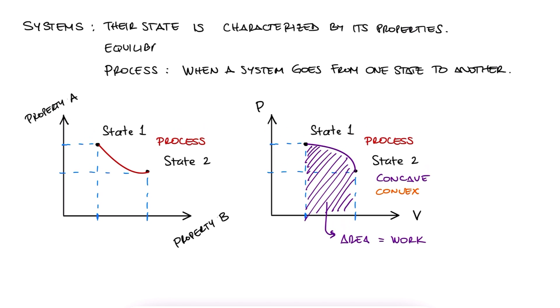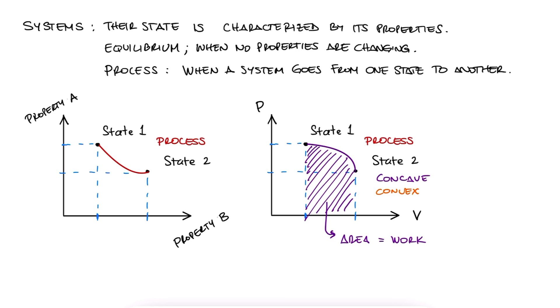A system is said to be in equilibrium when no properties are changing. In many cases, you can still have a process happen when one of the properties we care about is fixed. Basically, when one of the properties we are quantifying here is not changing.